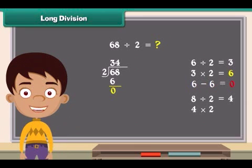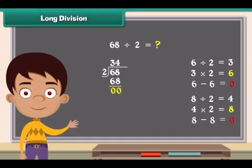Multiply the 4 and the 2 and put the answer right under the 8. Do the subtraction. That is 8 minus 8 is equal to 0. We ended with a 0 at the bottom and the answer is 34.